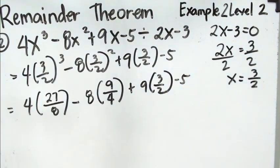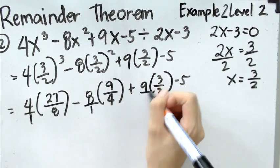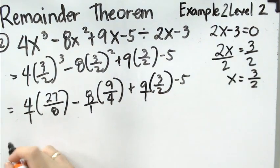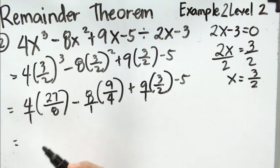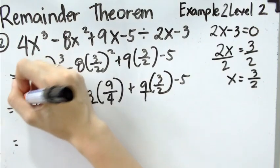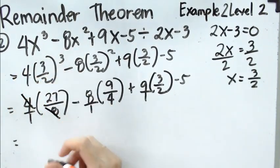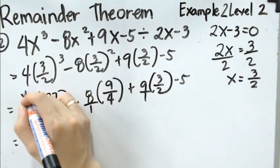Remember, whenever we are multiplying a fraction to a whole number, we can just simply add 1 as the denominator so that it will be easier for us to multiply fractions to fraction. And then, if we can do some cancellation, or if they have common factor like 4 and 8, they are both divisible by 4, we can use that.